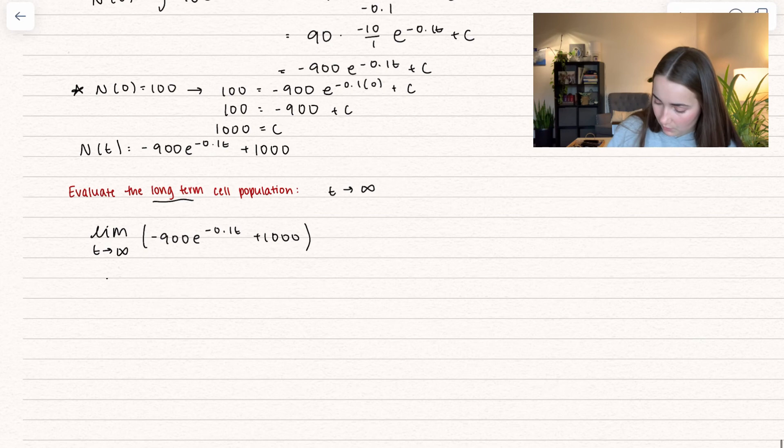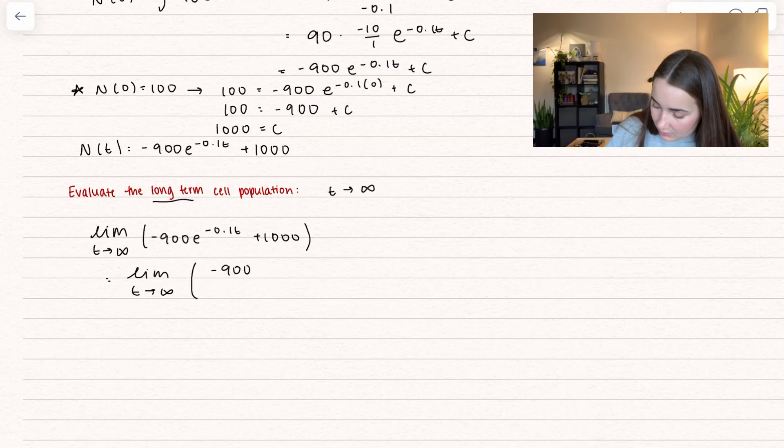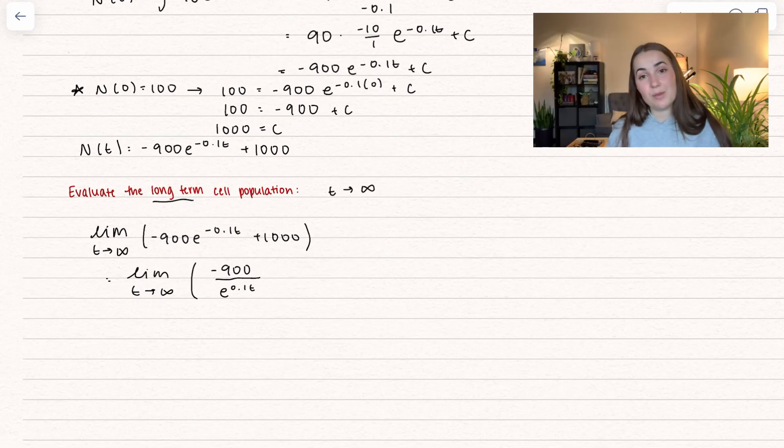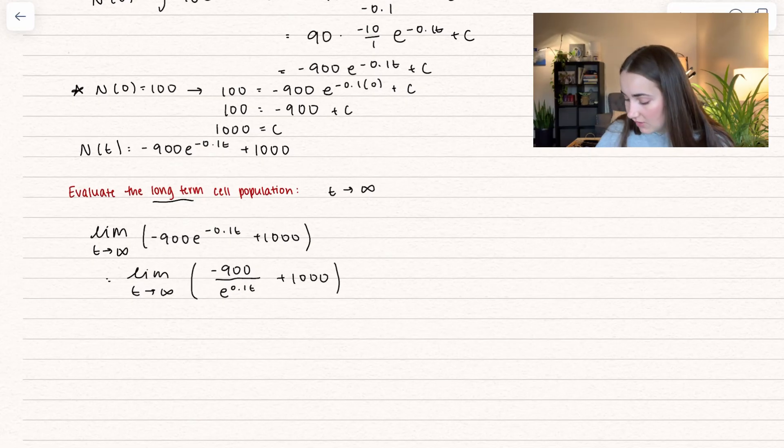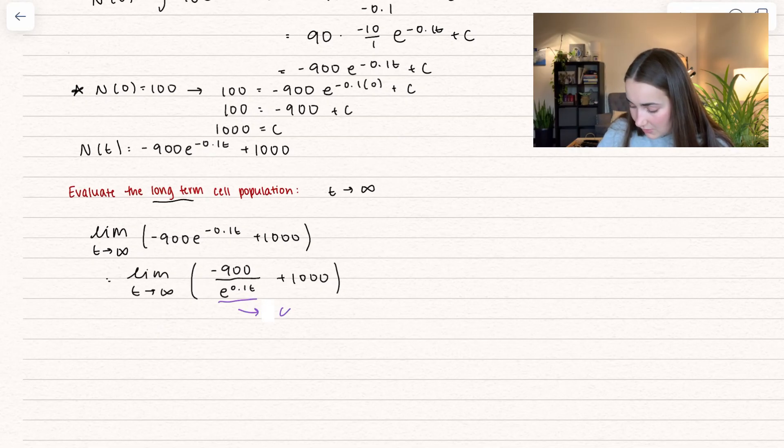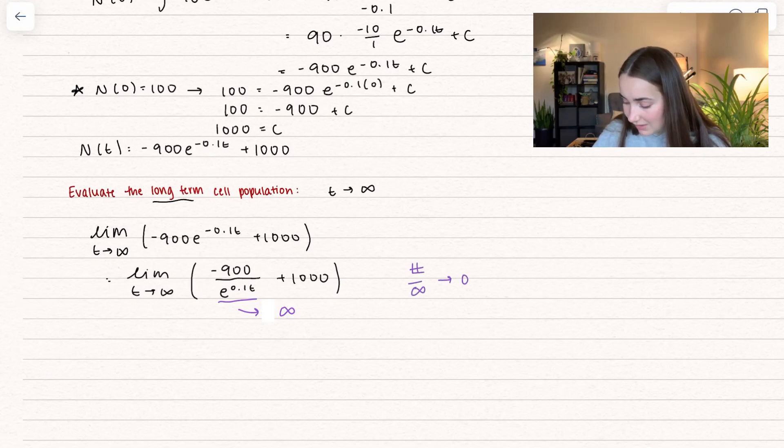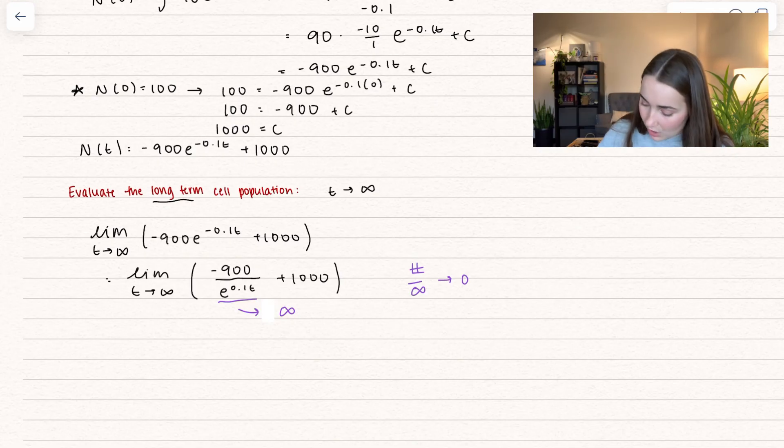Here we can rewrite this. We can say the limit as t approaches infinity. That negative 900 stays in the numerator, but we can move that e to the denominator using exponent rules, and the exponent becomes positive. So what happens when the denominator, e to the 0.1t, is approaching infinity? Well, when we have a number divided by infinity, that goes to zero. It gets really small, which tells us this term is going to zero.